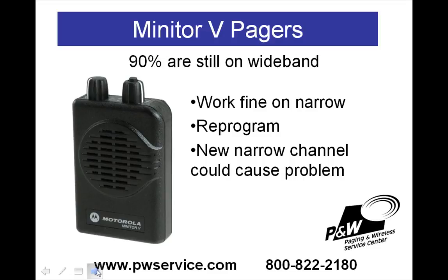People are concerned with 3s and 4s being wideband — well, 90% of Minitor 5s are also wideband, yet no one seems concerned about those. That's because the Minitor 5 is sold as wide or narrow, meaning it could be one or the other. So if you have a Minitor 5, it's very likely it's on wideband, and you should have no concern about using a 3 or 4 on wideband if you're using a Minitor 5 on wideband. For more information about narrow or wideband, visit our website at pwservice.com. We also sell new Minitor 6s, which can be programmed for narrow or wide — all the Minitor 6s we sell go out on narrowband. For questions or interest in the Minitor 6, call us at 800-822-2180.